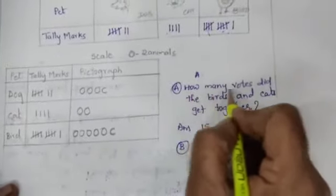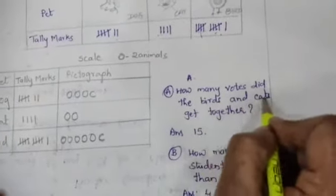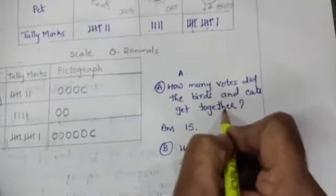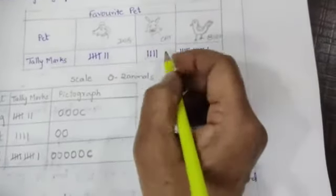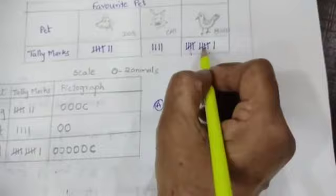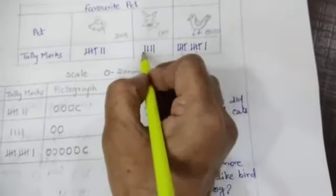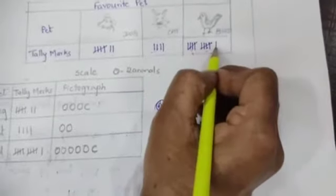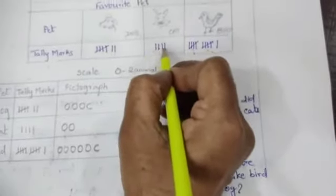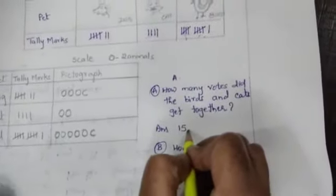Next question: How many votes did the birds and cats get together? So birds and cats, together how many votes did they get? Here 10, 11, 12, 13, 14, 15. 15 votes they got.